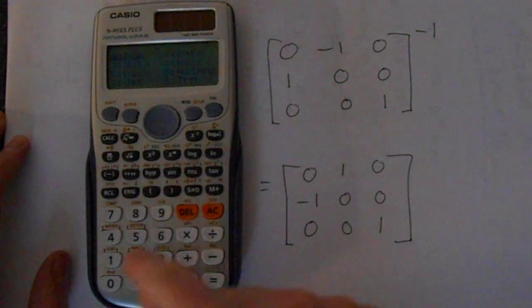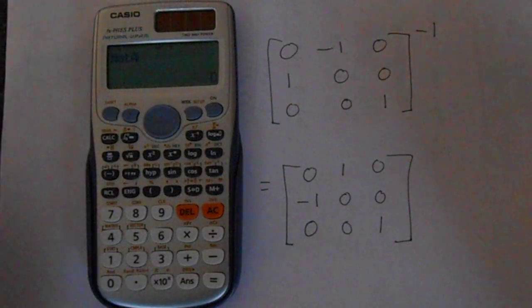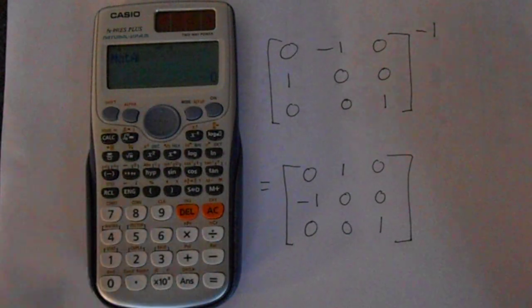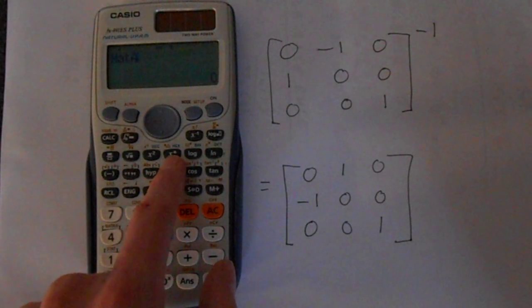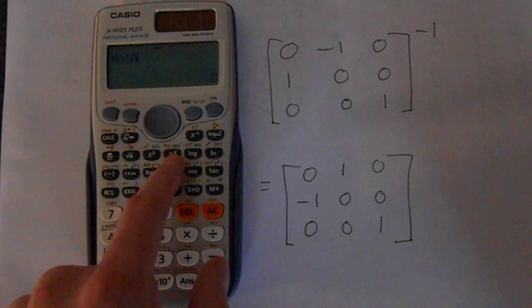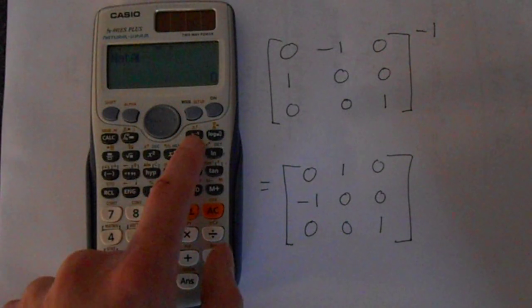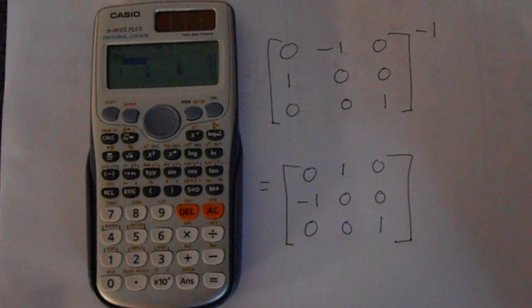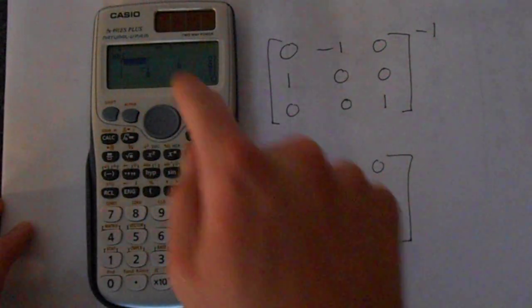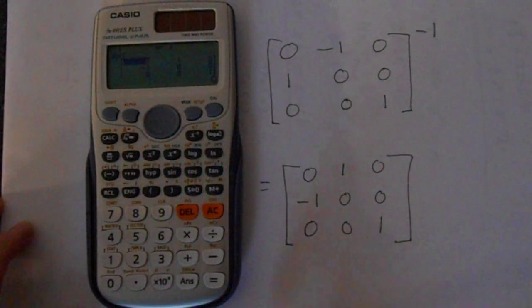So if we press 3, we get matrix A on here, so we can do operations on this as we would do with some algebra. Don't use this button. Don't try and put power minus 1 in like that. You have to use this button here. So press minus 1 as so, then press equals, and we get this. We've got the minus 1 there. We've got the 1 up there, and the 1 down there.